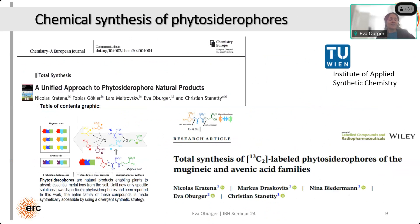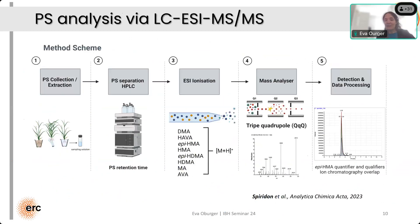That's why I started this whole project by collaborating with very clever people from the Technical University of Vienna, from the Institute of Applied Synthetic Chemistry. My collaboration partners developed a very clever, puzzle-like synthesis approach to chemically synthesize all eight phytosiderophores, either with or without 13C label. Having these compounds finally in our hands, we were able to set up our analytical method using an LC-MS/MS approach that now really allows us to accurately identify and quantify phytosiderophores.